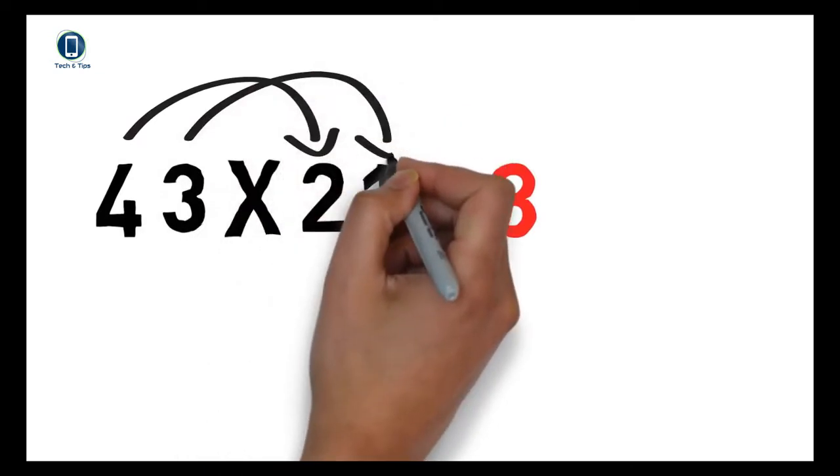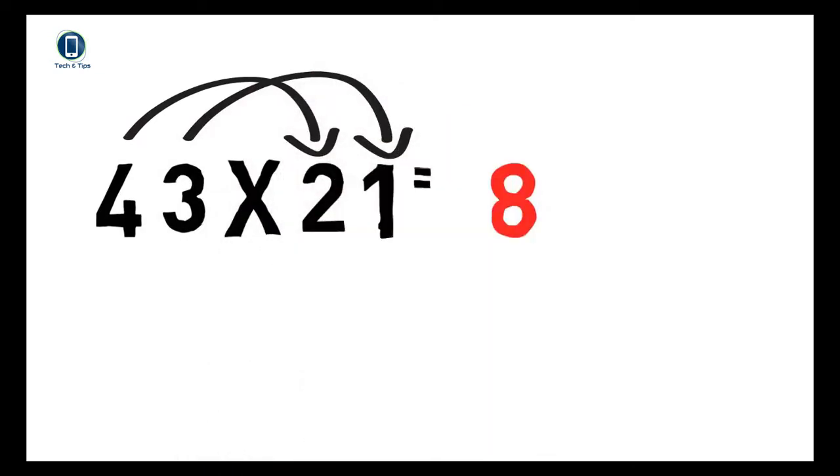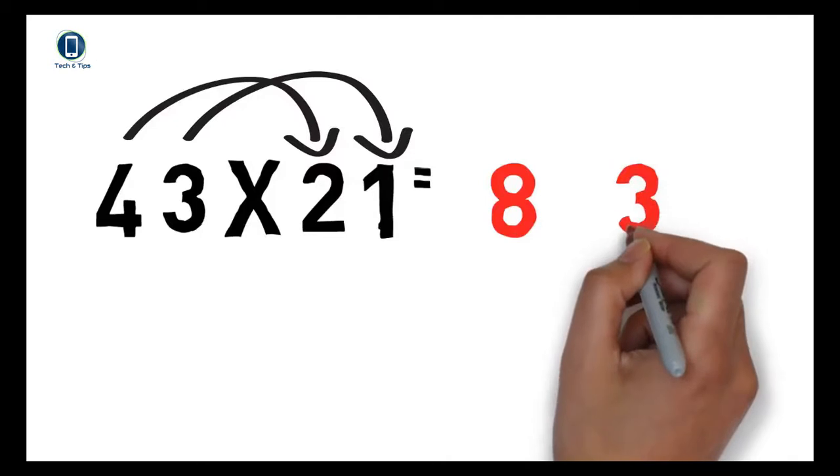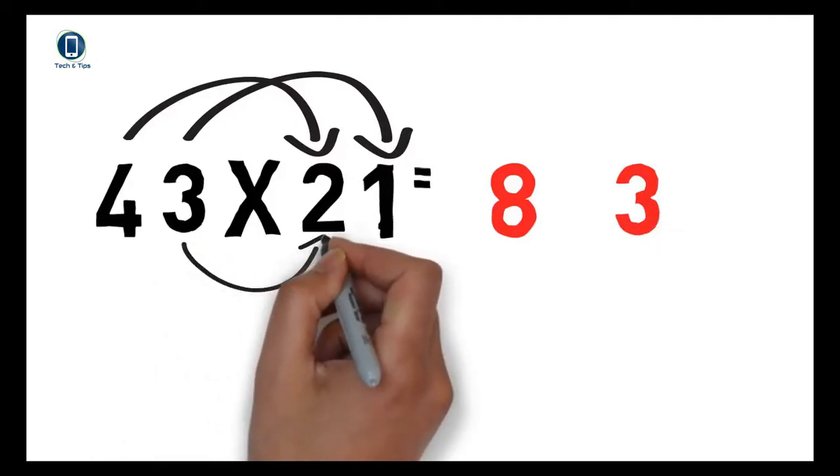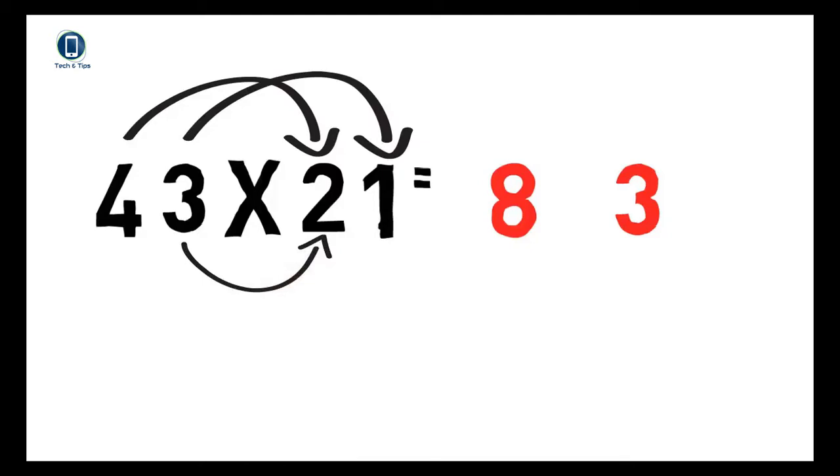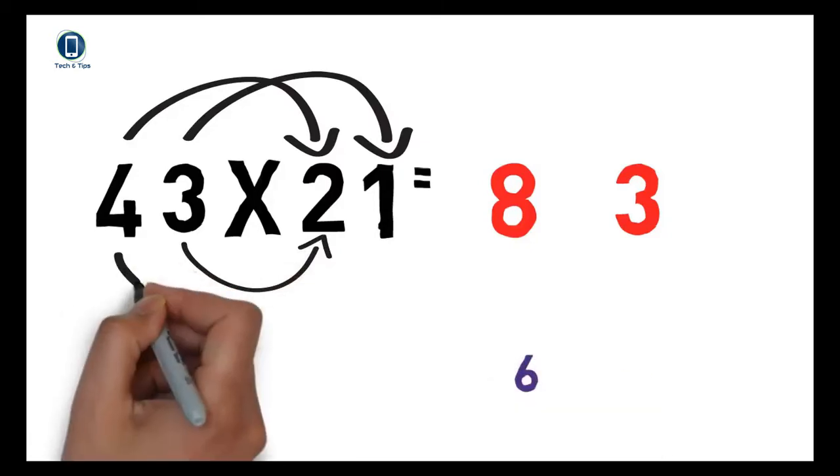number by the second digit of the second number, that is 3. Write 3 in the ones place. Now multiply both middle numbers: 3 × 2, write 6. Now multiply the first and last numbers: 4